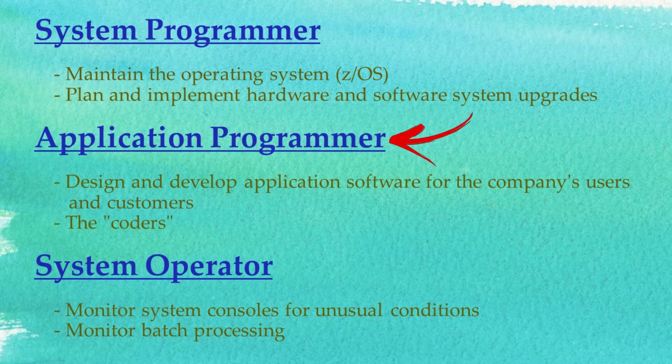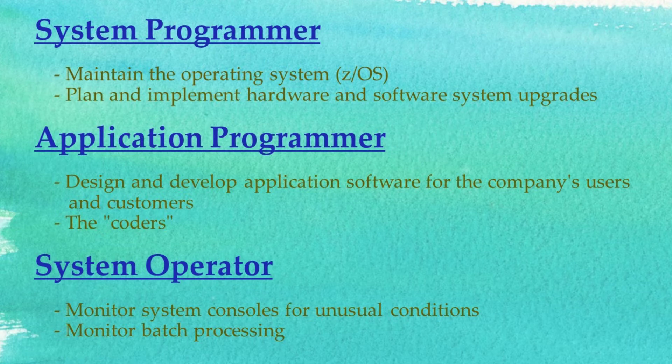The application programmer designs and develops application software for the company's users and customers. These are the coders, and yes, we're often talking about COBOL, but Java and C++ have become popular as well. The system operator monitors system consoles for unusual conditions, like error messages, and works with the system programmers to keep things running smoothly. They also monitor batch processing.